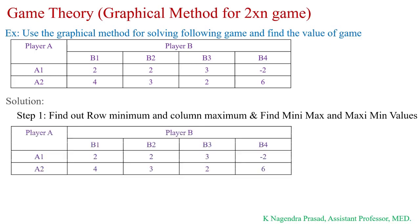First we copy the given data and observe the row minimum. There are two rows: A1 and A2. For the A1 row, which consists of values 2, 2, 3, and -2, we find the minimum value, which is -2. For the A2 row, consisting of values 4, 3, 2, and 6, we find the minimum value, which is 2.